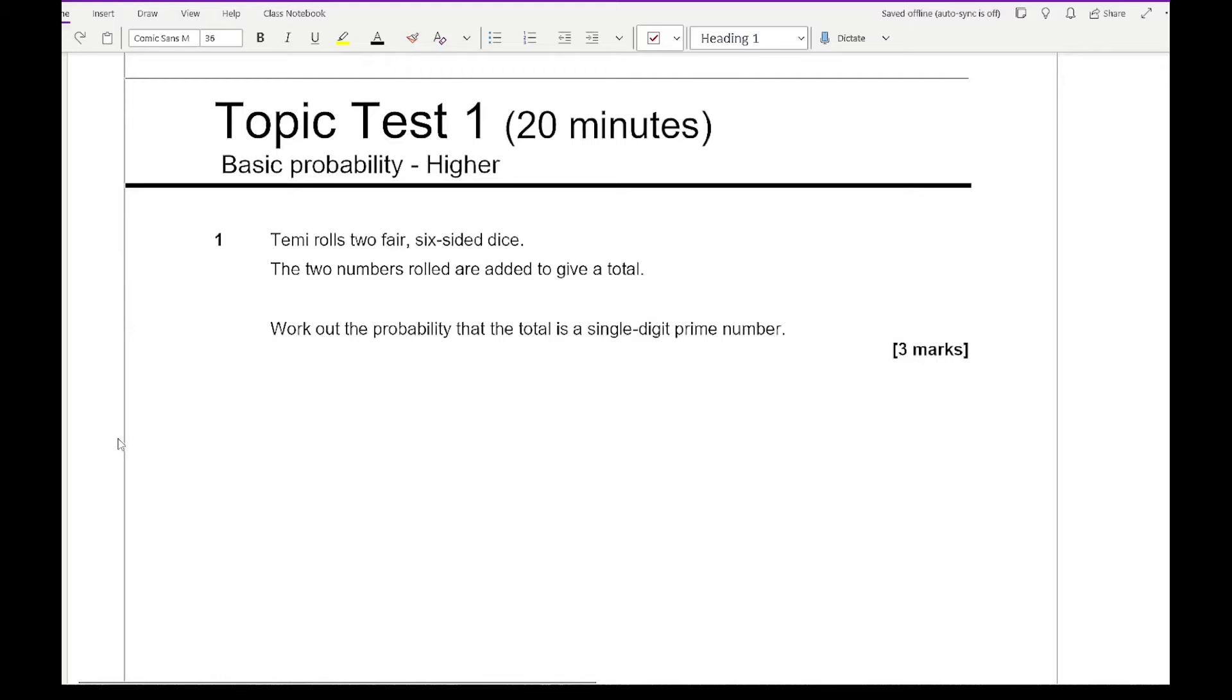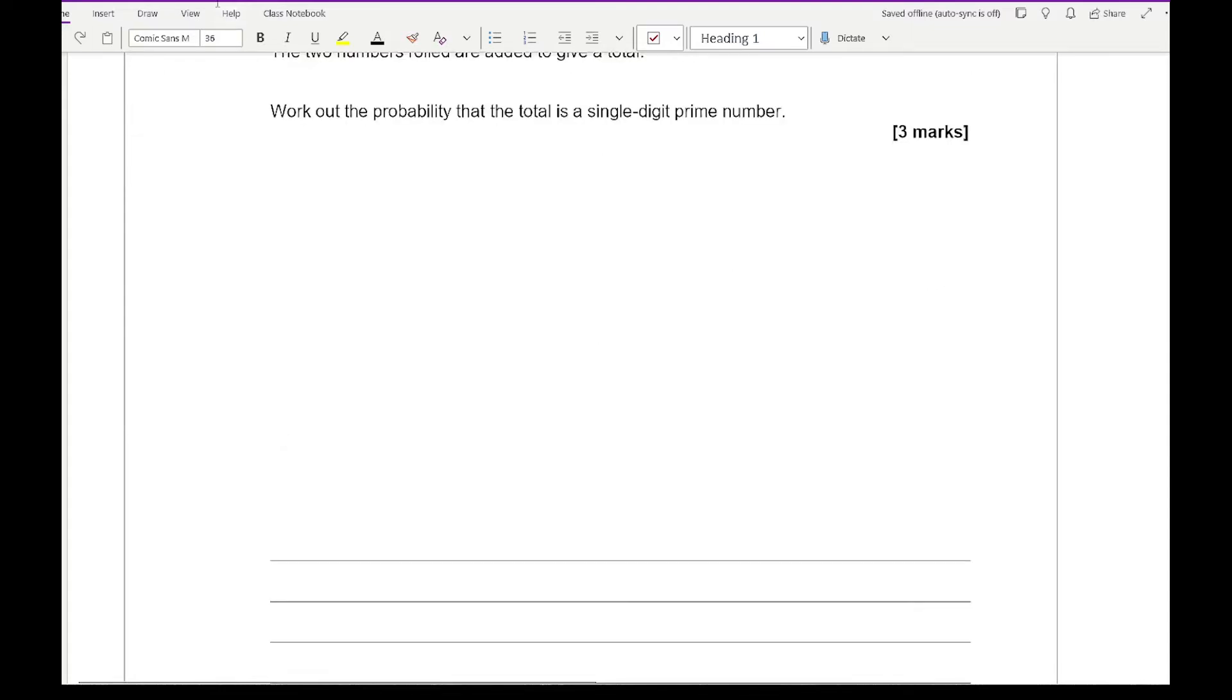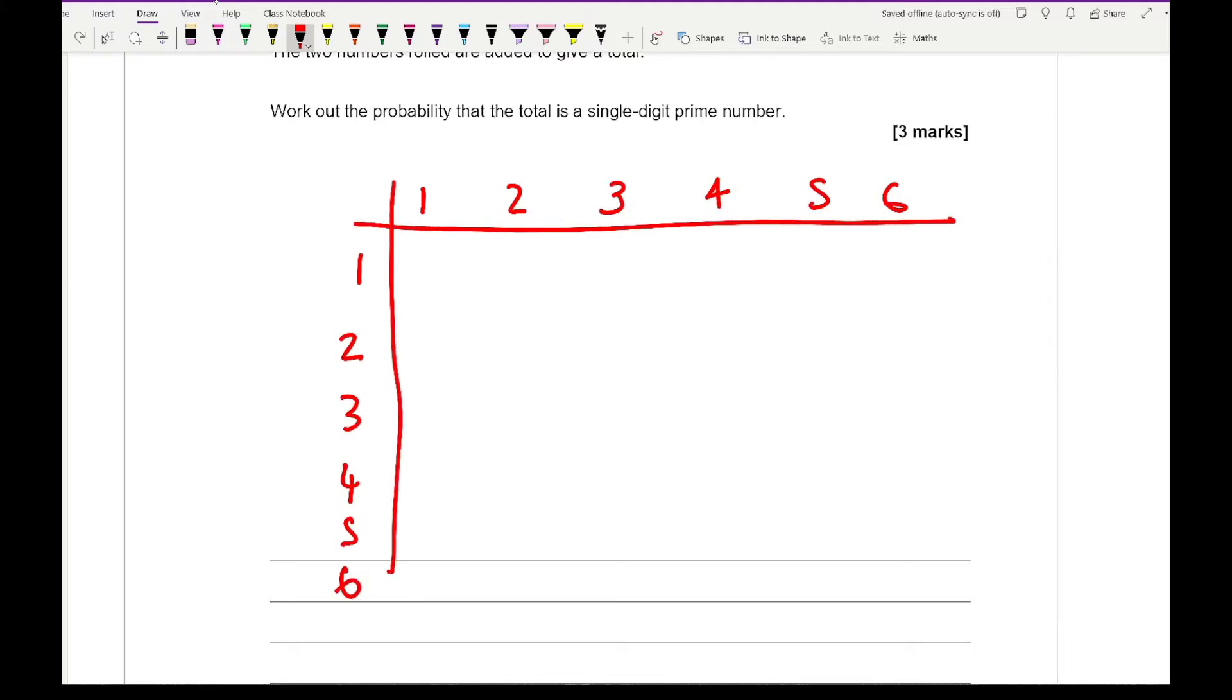It says that Temi rolls two fair six-sided dice, and the two numbers rolled are added to give a total. Work out the probability that the total is a single digit prime number. We've been given a lot of space, and I think the main reason for this is because it's allowing us to do a sample space diagram. Depending on how well you know probability problems with dice, it is possible for you to work this out without even the level of working out that we're about to do. So all we're going to do is add the numbers up, so I've got two, three, four, five.